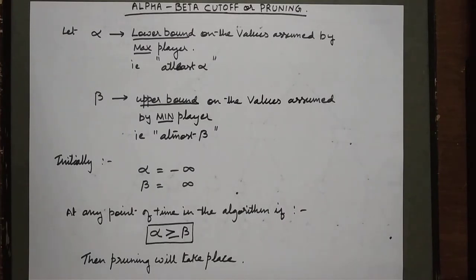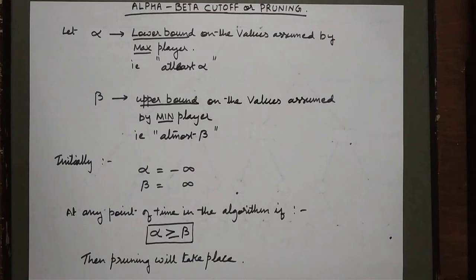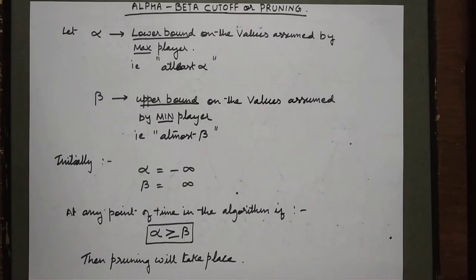However, there are some disadvantages with the minimax algorithm. The most important disadvantage is that in minimax, all the branches — whether a branch is fruitful or not — have to be considered for computation. So it's actually a computation loss. Maybe there is one branch from where you will never get the answer, still you have to traverse that branch. This adds up computations. Since the entire tree needs to be considered, the time complexity and space complexity for minimax is very high.